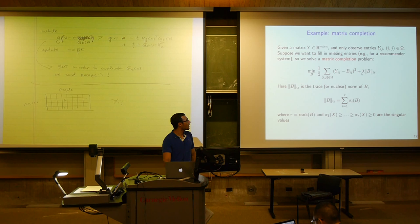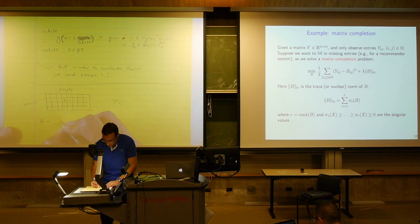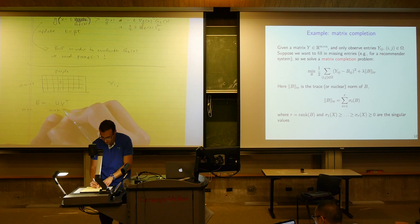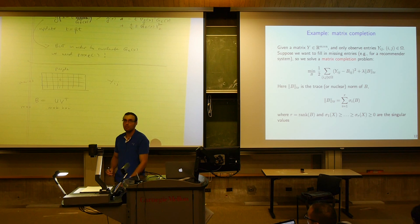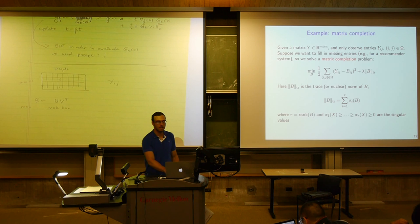This low-rankness is a form of regularization. A matrix that's low rank, say rank k, can be factored as a product of two matrices u and v, where u is m by k and v is n by k. We can think of these as latent factors that drive the ratings — canonical movie genres, for example — that explain what we're seeing in the Netflix problem. This motivates imposing low-rankness as a regularization tool.